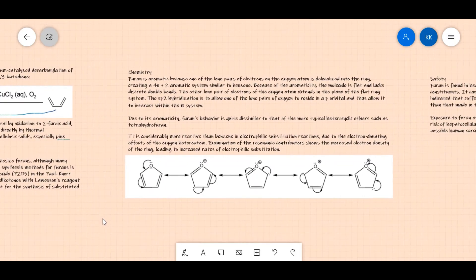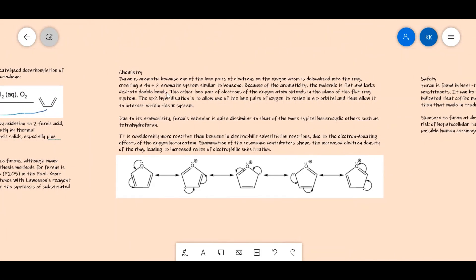Now let's look at the chemistry. Furan is aromatic because one of the lone pairs on the oxygen atom is delocalized into the ring, creating a 4n+2 aromatic system. 4n+2 means there are 6 pi electrons. This is similar to benzene because it also has 6 pi electrons.